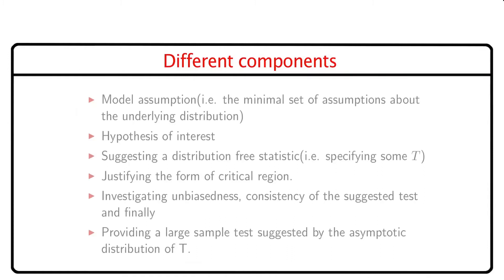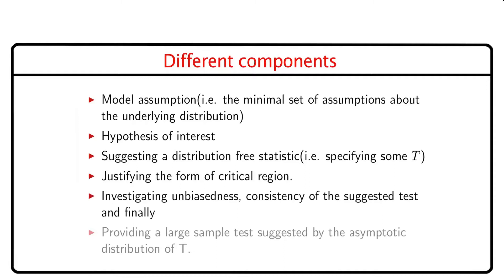A non-parametric hypothesis testing problem comprises the following components: (1) model assumption — the minimal set of assumptions about the underlying distribution; (2) hypothesis of interest — whether our interest is in location, scale parameter, or else; (3) suggesting a distribution-free statistic, specifying some statistic t; (4) justifying the form of the critical region based on intuitive appeal; (5) investigating unbiasedness and consistency of the suggested test; (6) providing a large sample test from the asymptotic distribution of t; and lastly, (7) in some situations, deriving a distribution-free confidence interval.